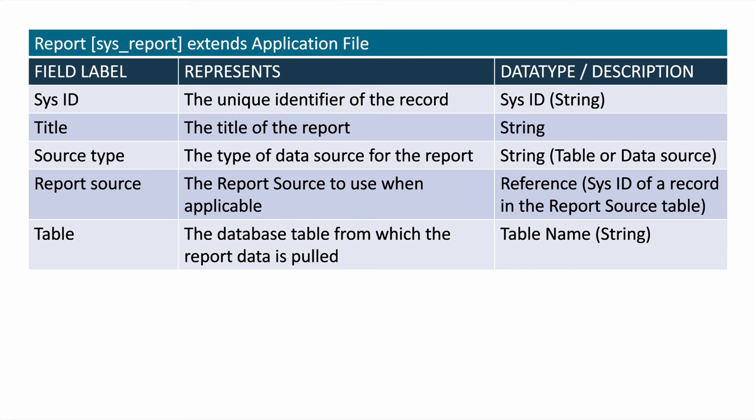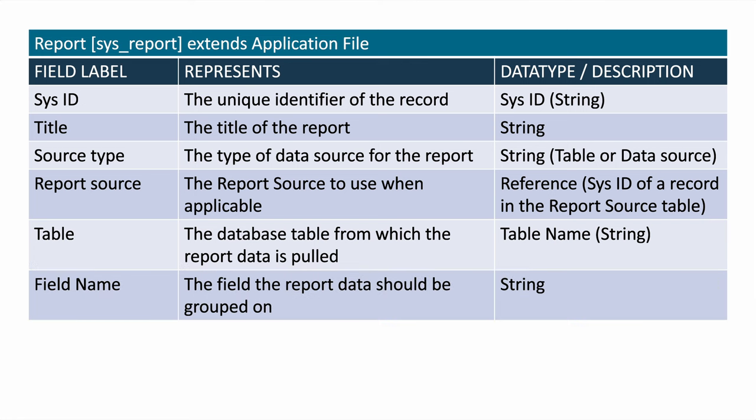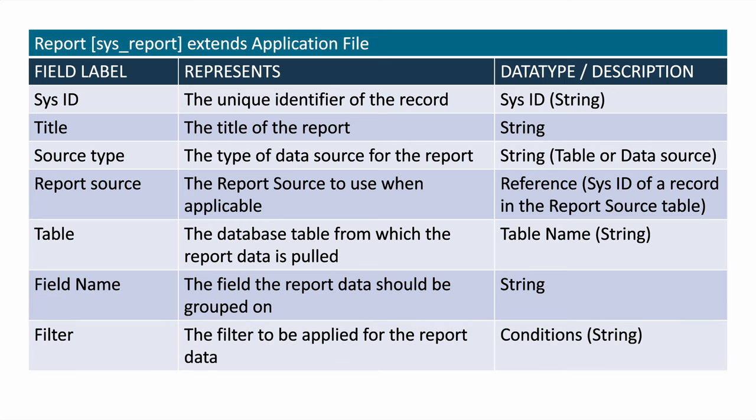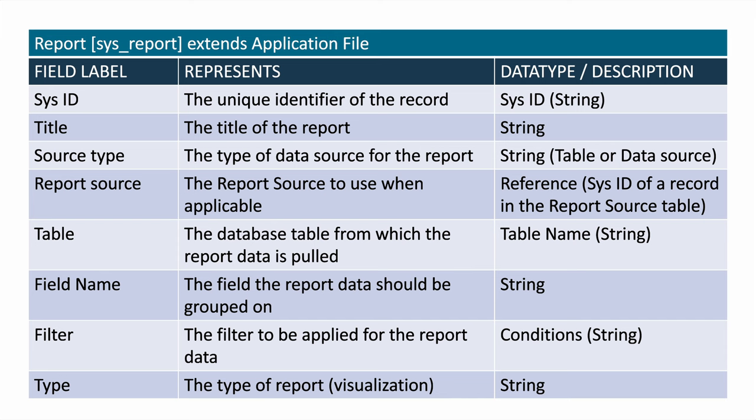The table field stores the primary database table from which the report data is pulled, and the field name field stores the field within that table that the data should be grouped on. You'll see in our next demonstration why most reports include a field used for grouping the data for presentation purposes. The filter field is a special string type field that tells the platform about any filtering conditions to apply to narrow down the data being included in the report. And finally, the type field specifies which type of report or visualization the platform should use when presenting the report data.